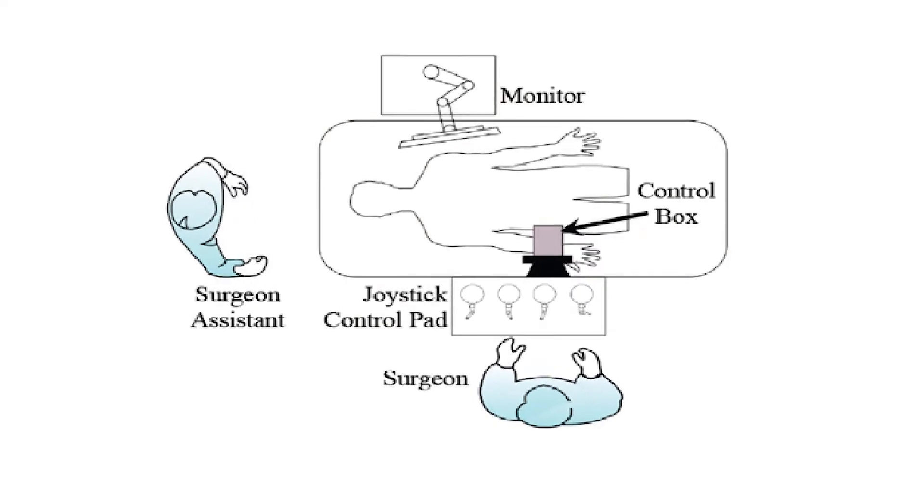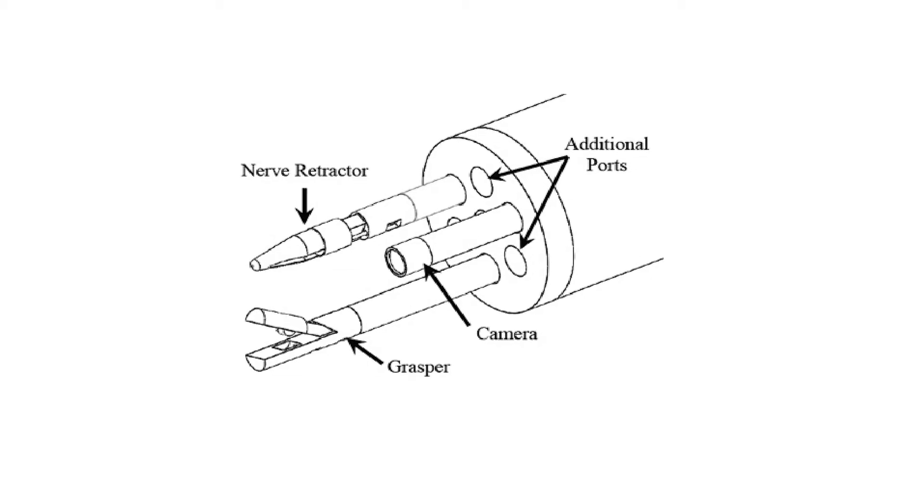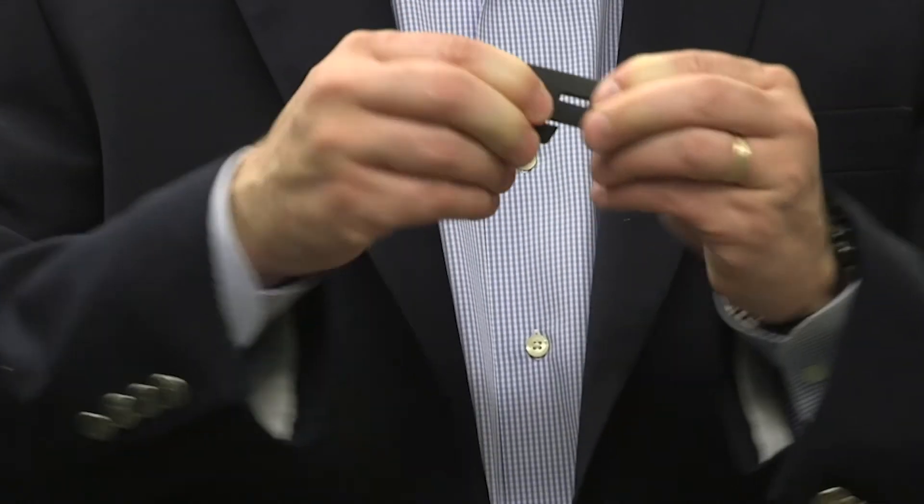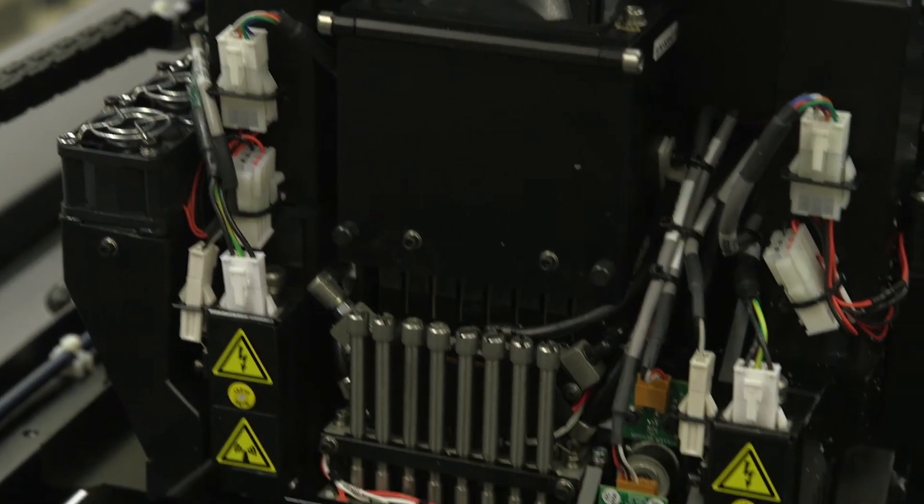Our system allows for teleoperated control of multiple manipulators in the workspace, so you can use more than one manipulator at a time. It allows a camera to be repositioned in the workspace to get more visibility. We have articulated instruments as opposed to rigid instruments, so that gives wrist-like movements to the surgeon, more dexterity in the workspace.